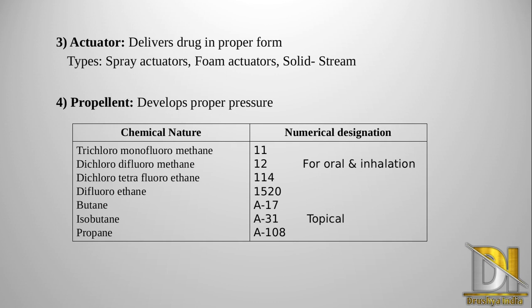There are various types of propellant, and each propellant has a specific numerical designation. The first is trichloromonofluoromethane, designated as 11. The next is dichlorodifluoromethane, designated as 12. The third is dichlorotetrafluoroethane, designated as 114. These first three are used for oral and inhalation aerosols — meaning they are safe to inhale.